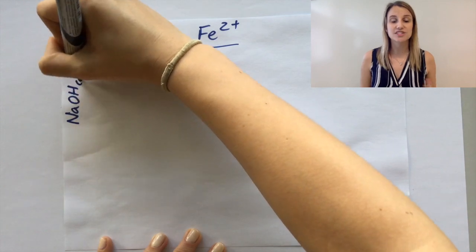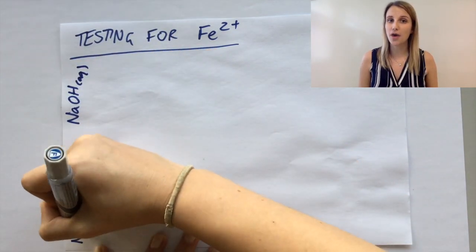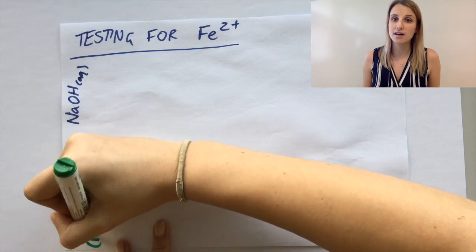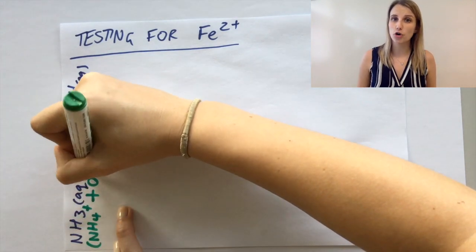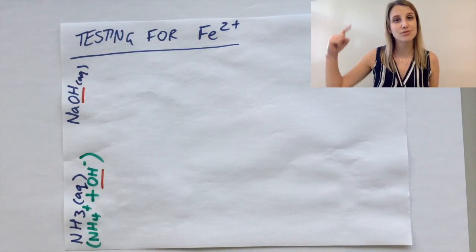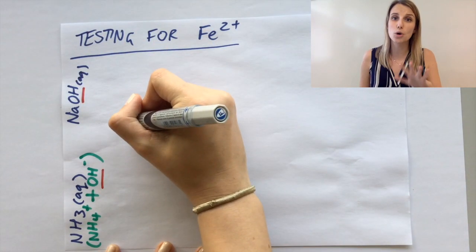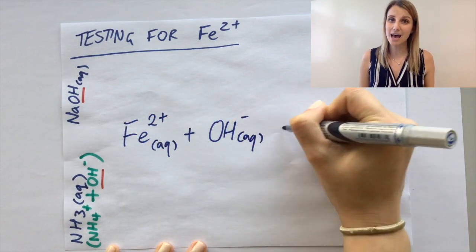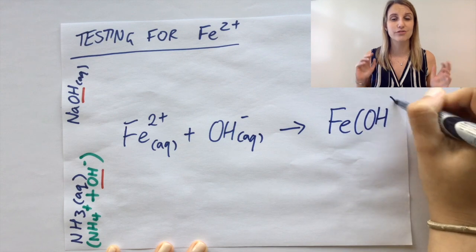So we did the reaction with sodium hydroxide and with ammonia. But remember, the ammonia in water is really NH4 plus and OH minus. And the Fe2 plus is reacting with the hydroxide ions in both examples. So actually, the equation behind what is happening is identical for both.